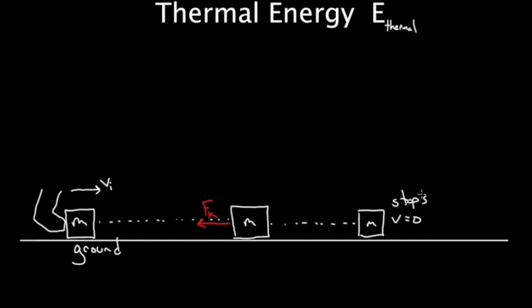V equals zero because it stops. Let's check out what the energy does. Initially, what kind of energy did we have? We had kinetic energy because this box was moving. It was moving so it had ½mvi². That's the formula for kinetic energy. And at the end, when the box stops, how much kinetic energy does it have? This box has zero kinetic energy because it had no speed whatsoever.